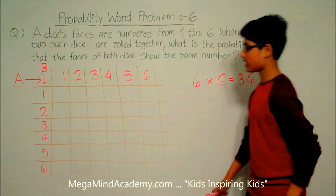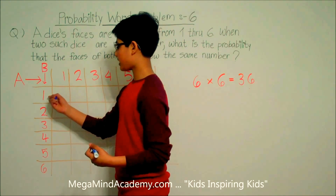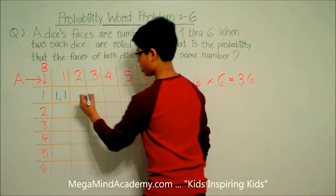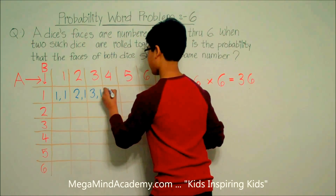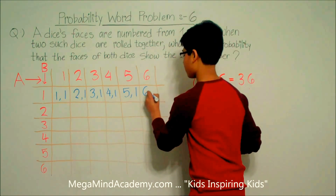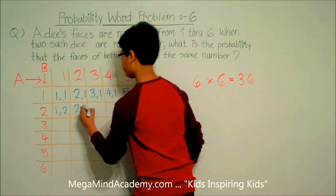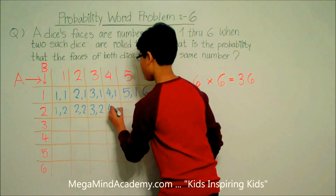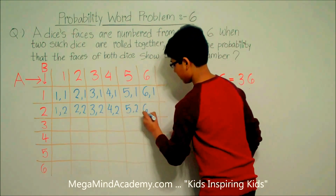Let's see how we get 36 different outcomes. The first outcome is Dice A rolling 1 and Dice B rolling 1 — so 1 and 1. Then 2 and 1, 3 and 1, 4 and 1, 5 and 1, 6 and 1. Then 1 and 2, 2 and 2, 3 and 2, 4 and 2, 5 and 2, and 6 and 2.